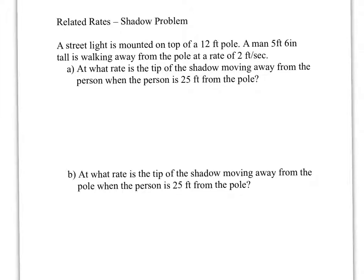And this first one, it says a street light is mounted on top of a 12 foot pole, and a man 5 feet 6 inches tall, so let's start listing our givens, is walking away from the pole at a rate of 2 feet per second. Okay, so let's go ahead and start listing what we are given here.